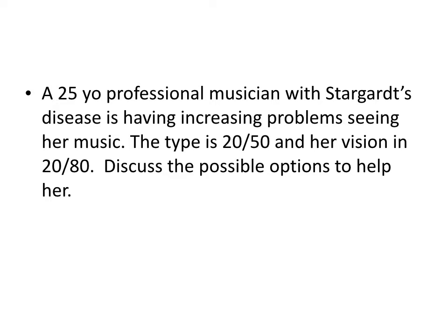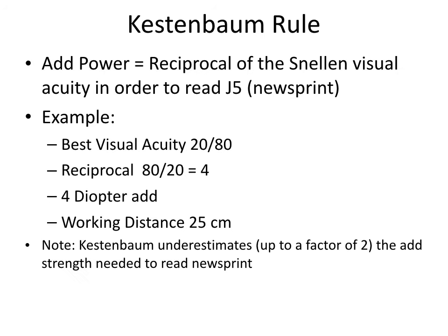Our second case is a 25-year-old professional musician with Stargardt's disease who's having increasing problems seeing her music. The type on the music is 20/50 and her vision is 20/80. The Kestenbaum rule is the reciprocal of the Snellen visual acuity in order to read J5. In this case, visual acuity is 20/80, the reciprocal is 4, so consider a 4-diopter add. The working distance would be 25 centimeters.